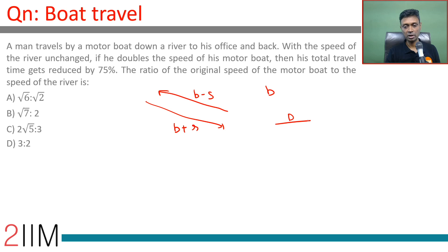So, some distance by B plus S plus the same distance by B minus S is time taken T.